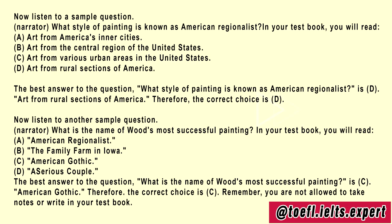Sample question: 'What style of painting is known as American Regionalist?' The best answer is D: 'Art from rural sections of America.' Therefore, the correct choice is D. Another sample question: 'What is the name of Wood's most successful painting?' The best answer is C: 'American Gothic.' Therefore, the correct choice is C. Remember, you are not allowed to take notes or write in your test book.